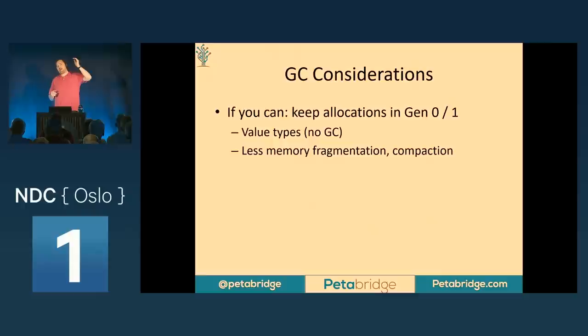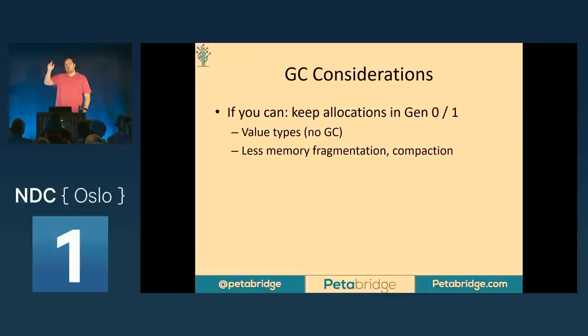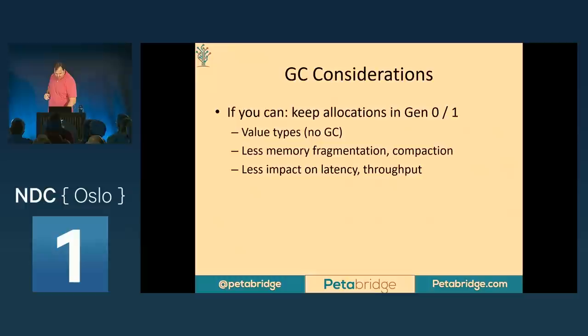In Gen 0, if we're allocating something at the top of the heap — because that's just the code executing right now — everything lower on the heap is the older Gen 2 and Gen 1 stuff that survived multiple garbage collection attempts. We can allocate a string on the heap and then pop it right off when the function exits, which is very inexpensive. It doesn't involve moving other objects around in memory. That's one of the reasons why Gen 0 collection is so cheap.